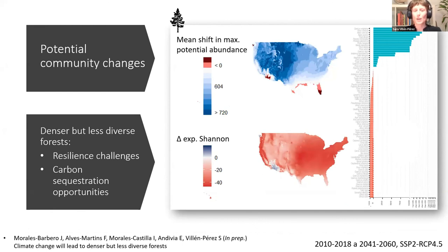We can translate this to community also, as we did for trees in the United States, where we predicted that climate change will lead to denser but less diverse forests in the future, with consequential resilience challenges but also carbon sequestration opportunities.